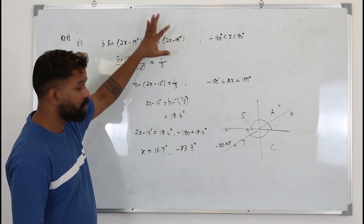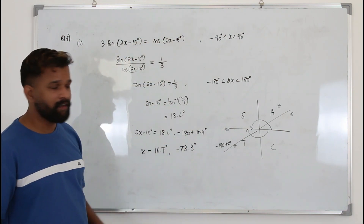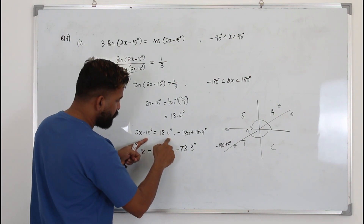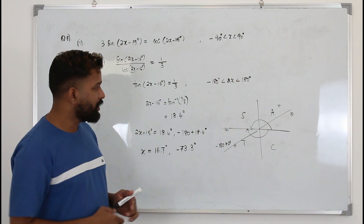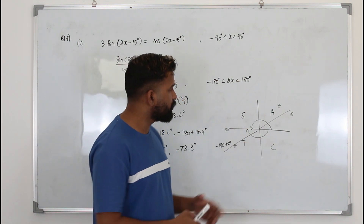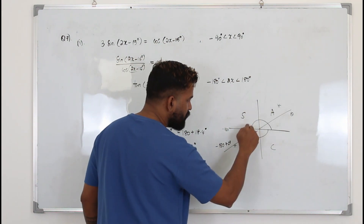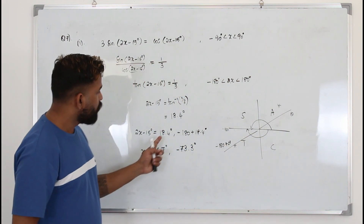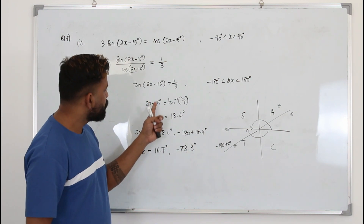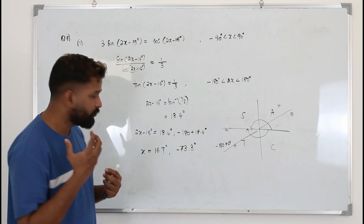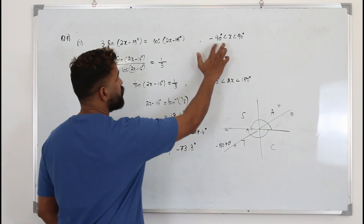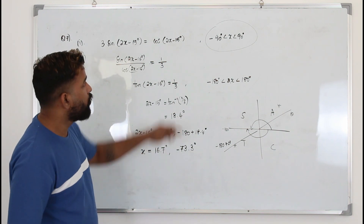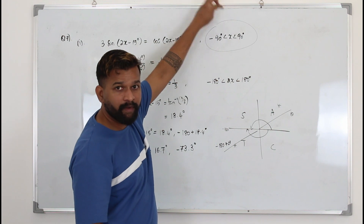You can use the textbook method or this method. But if you use this method and you have a plus — say 2x plus 15 — you are going to subtract 15 from the value and divide by 2. In that case, take one extra value: go out of the limit and include 180 plus theta, giving one more solution. When you subtract 15 and divide by 2 you get the final answers. Then compare those final values with your original limit, and if any fall outside the limit you can ignore them.